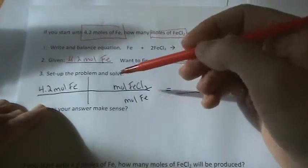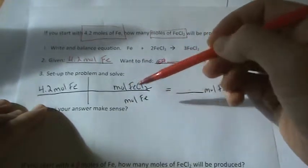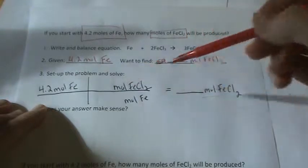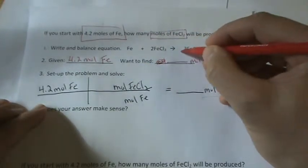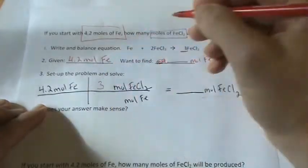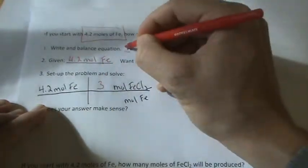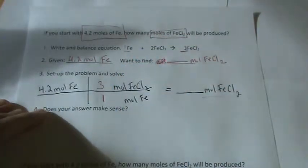And I want moles of FeCl2 so that can just go on the top. Now, what I need to do is find the coefficients, the ratio of moles of FeCl2 to moles of Fe, cancel units out, and I'll be left with this. So let's take a look and see FeCl2 has a 3 in front of it, and the Fe over here has a 1 in front of it. So I've got my ratio.